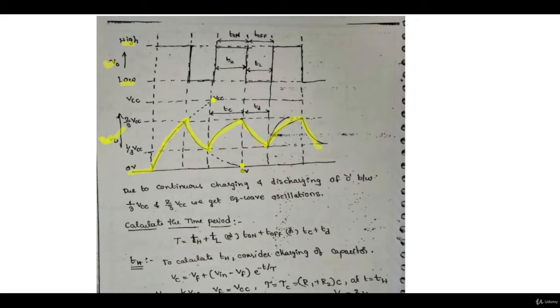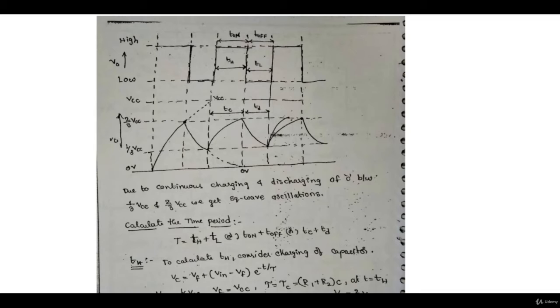At terminal 3, the output you get is plus V-sat, minus V-sat, plus V-sat, minus V-sat - a square wave. One important thing: the charging time is different from the discharging time because the charging time constant is (R1 + R2)·C while the discharging time constant is R2·C. So at the output you have an unsymmetrical square wave.